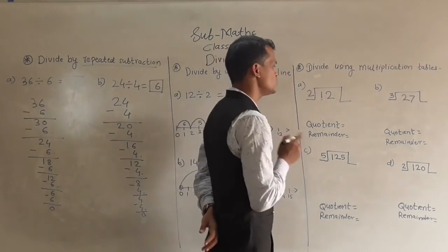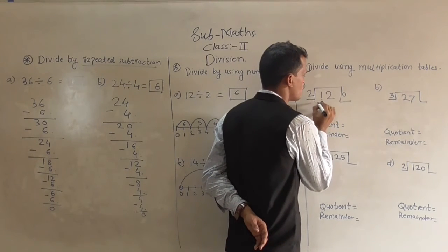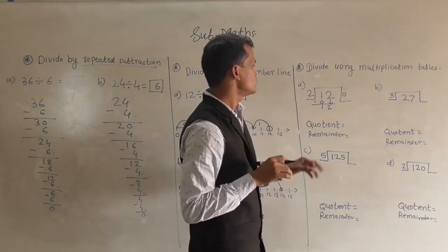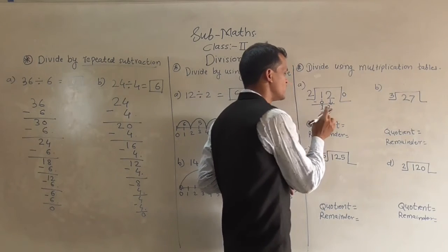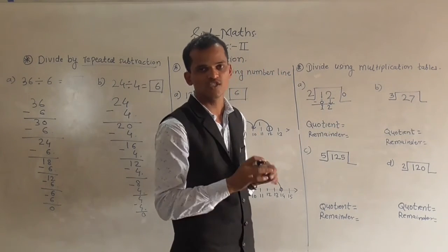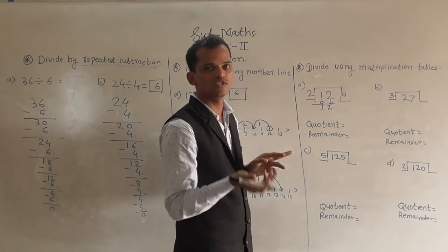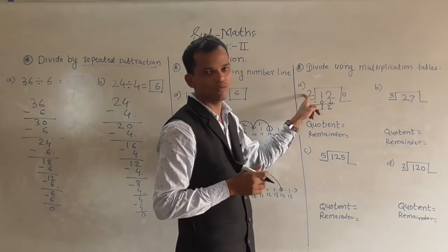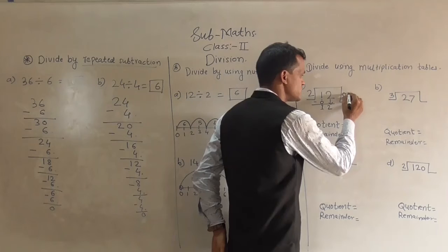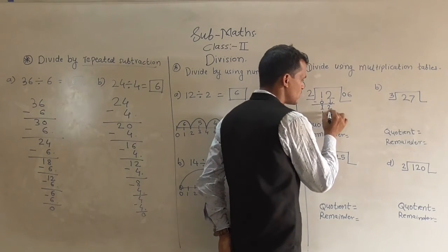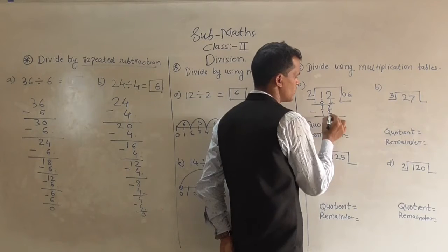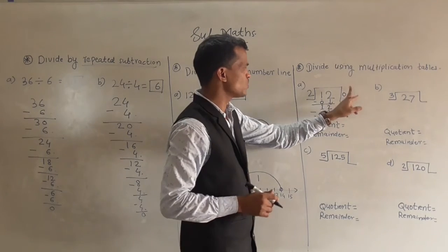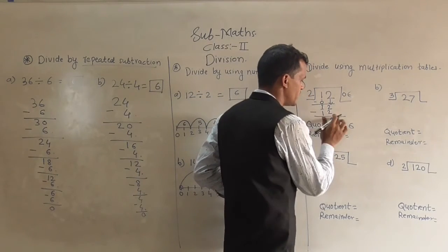The first digit is 1, which is smaller than 2, so write 0 in the quotient and subtract 0 from 1: 1 minus 0 is 1. Then bring down the next digit 2, forming 12. Check whether 12 comes in the table of 2: yes, 2 sixes are 12, so write 6 in the quotient. Subtract 12 from 12: 2 minus 2 is 0, 1 minus 1 is 0. So the quotient is 6 and the remainder is 0.